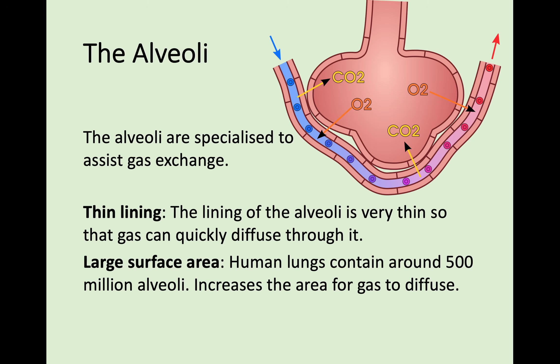Next, alveoli have a large surface area. Human lungs contain around 500 million alveoli. If you think of these alveoli being little sacs, all of those sacs have a large surface area. If you think about 500 million of them, that is a huge amount of surface area for gas to diffuse. All of these are crammed into our lungs, around our structures, off our bronchioles, and it's there so that we have this large surface area for carbon dioxide and oxygen to move back and forth.